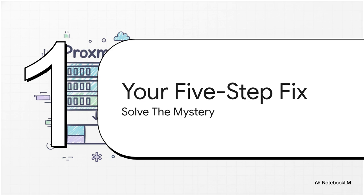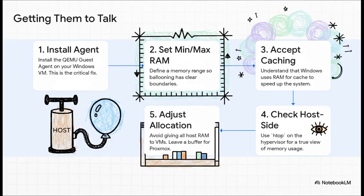You're here because you want to fix it. And the good news is, solving this communication breakdown and getting your dashboards to actually make sense is surprisingly straightforward. Here are your five-step fix. Step one — and this is the big one — install the QEMU guest agent on your Windows VM. This is what connects the air pump. Step two, set a minimum and maximum memory value for the VM; this gives the balloon driver some rules to follow. Step three is more of a mindset change: accept that OS caching is normal and it's actually helping your system run faster. Step four, if you want the real story, use a tool like HTOP on the Proxmox host itself to see what the VM process is consuming. And step five, just good practice: never give a VM all of your host's RAM — always leave a little buffer for Proxmox itself.